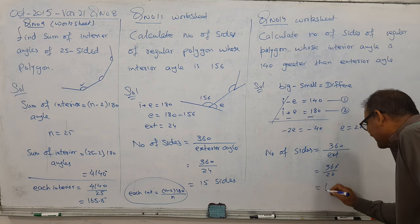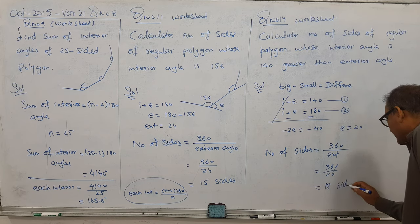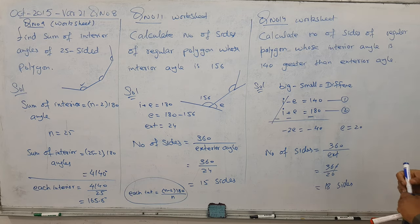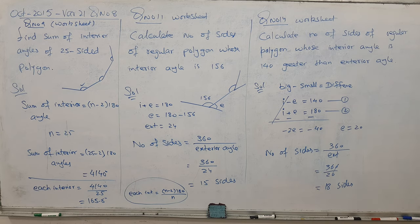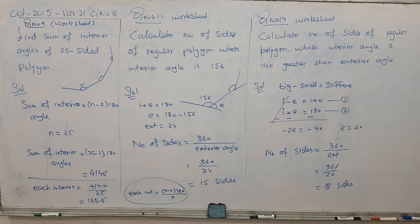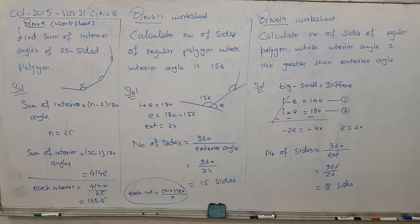Cancel the zero - 18 sides are there. It means a regular polygon with 18 sides has a difference of 140 degrees between interior and exterior angles. This question is also clear.